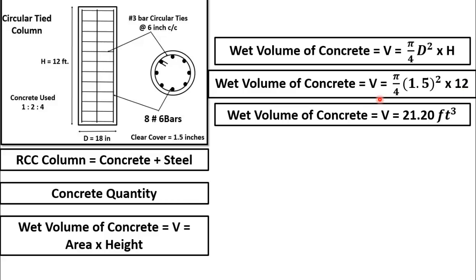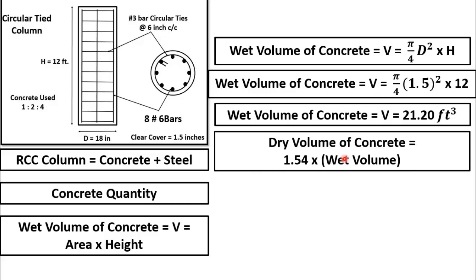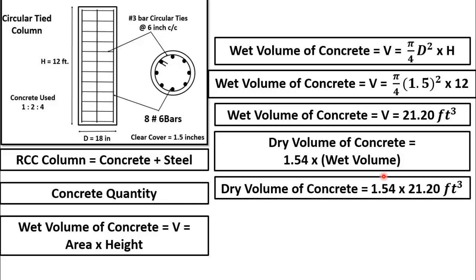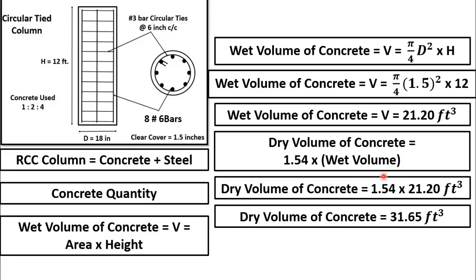This is the wet volume of concrete. Dry volume of concrete is slightly larger than wet volume of concrete. To obtain dry volume of concrete, just multiply wet volume by the increasing factor 1.54. Putting the value of wet volume into this equation, we get dry volume of concrete = 1.54 × 21.20 cubic feet. After simple calculation, dry volume of concrete is 32.65 cubic feet.